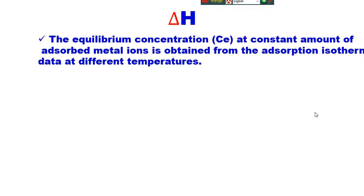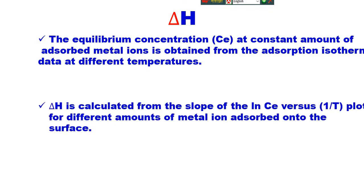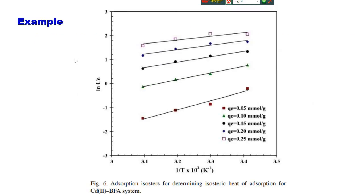First, equilibrium concentration at constant amount of adsorbed metal ion is obtained from the adsorption isotherm at different temperatures. Then the isosteric heat of adsorption is calculated from the slope of the ln C versus 1/T plot for different amounts of metal ion adsorbed onto the surface. Here is a typical example of the ln C versus 1/T plot at different Q values.